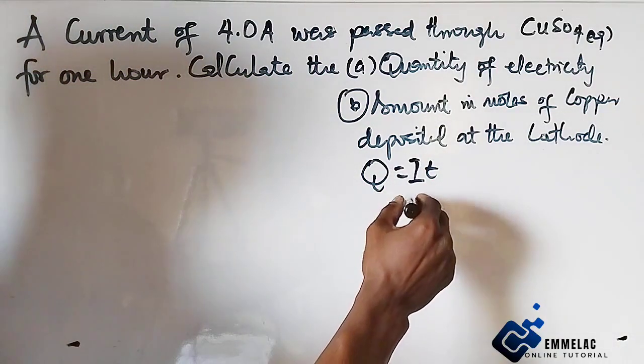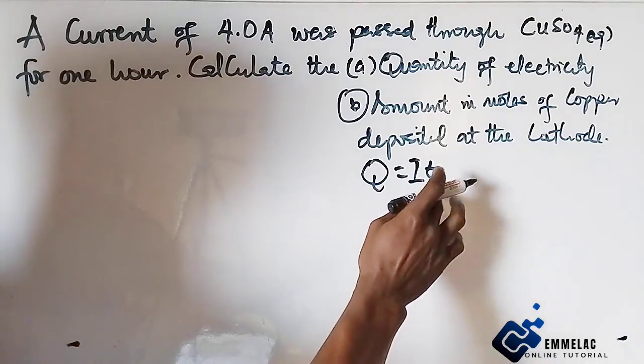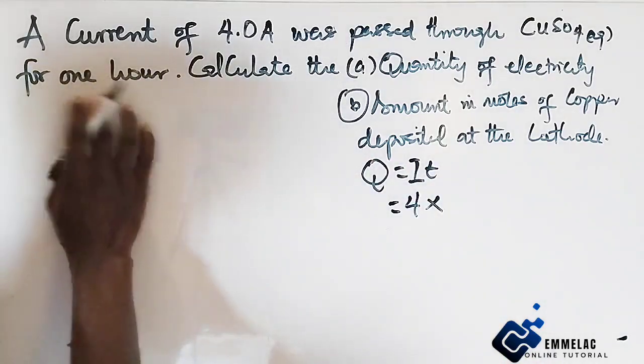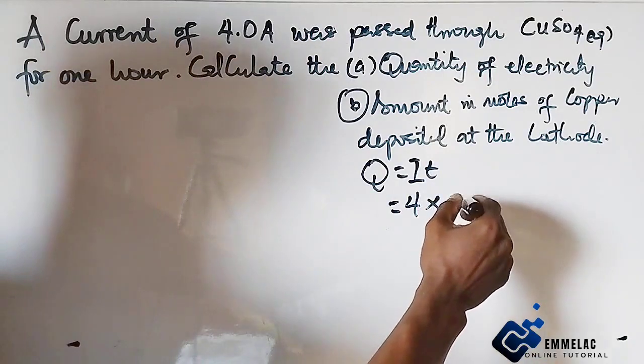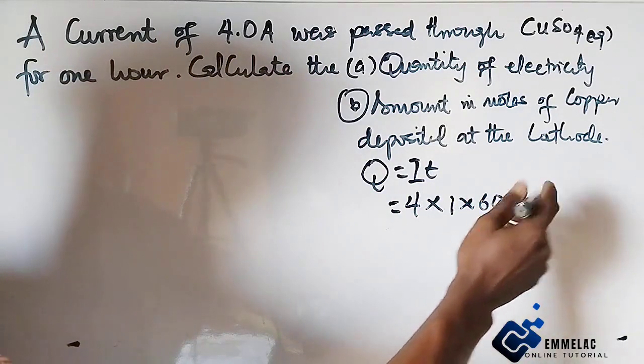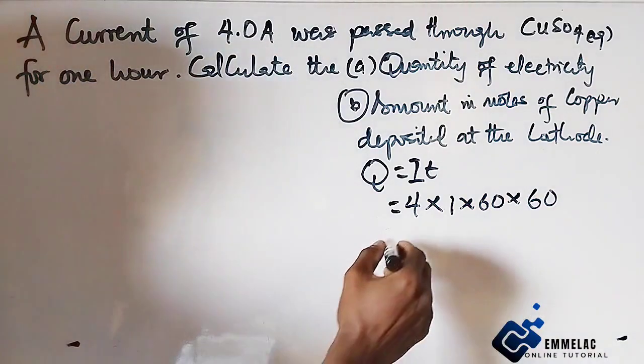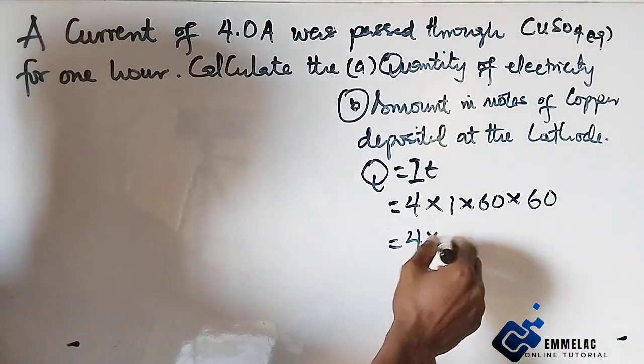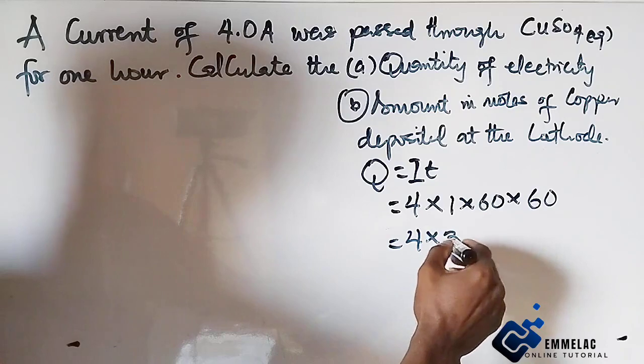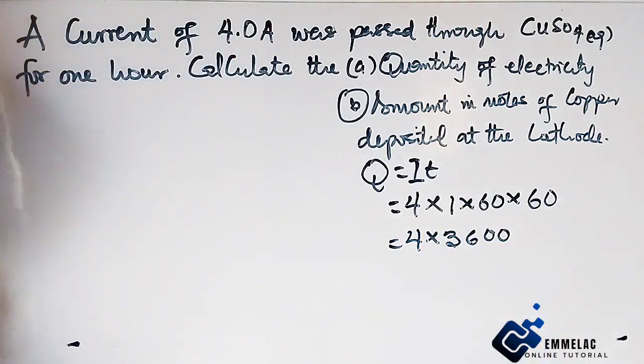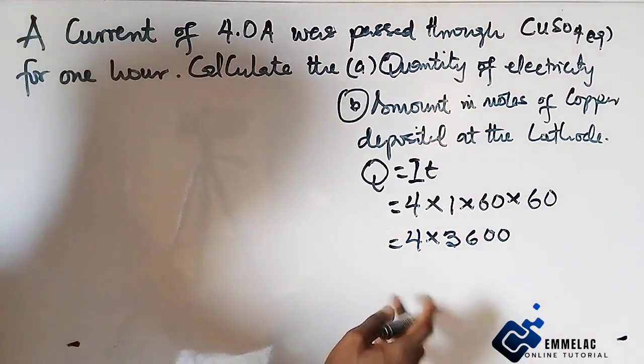Here we have the current is 4 amperes. The time is 1 hour, but we need to convert this to seconds. So it'll be 1 times 60 to minutes, times another 60 to seconds. So here we have 4 times 3,600. And when we multiply this together,